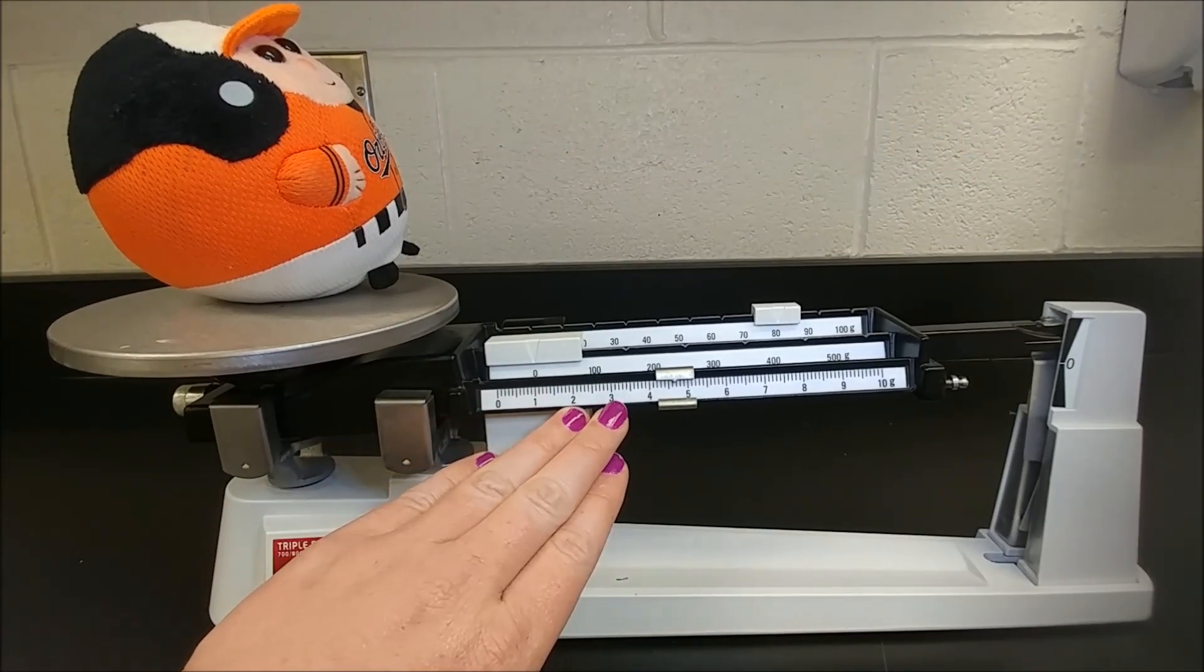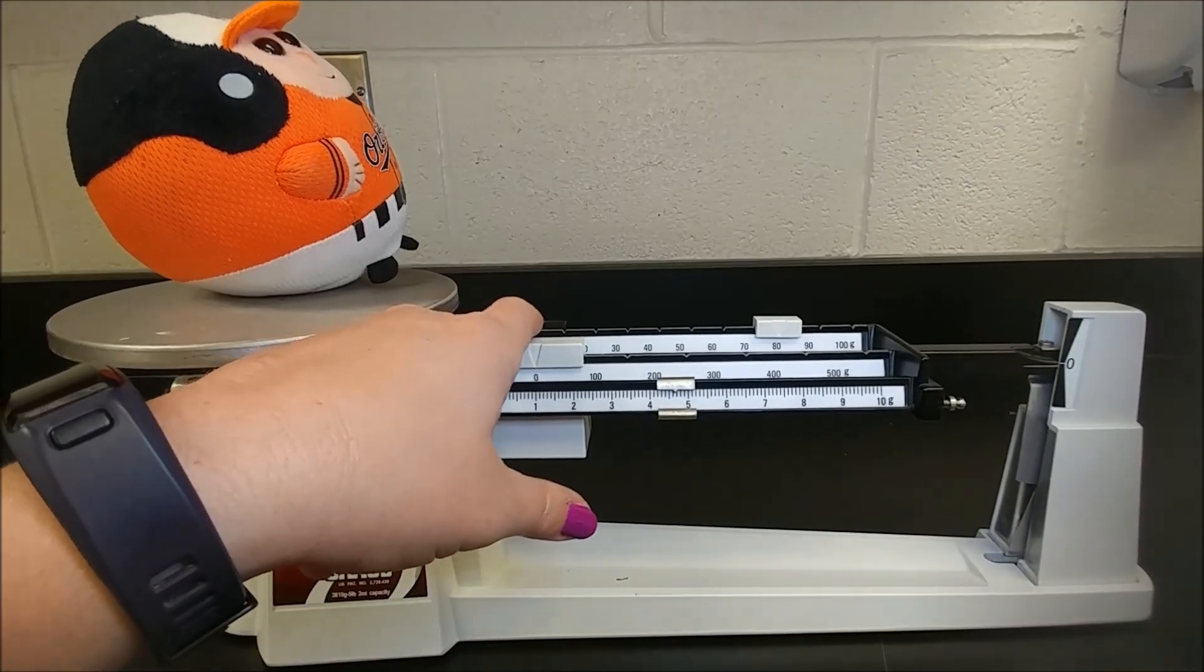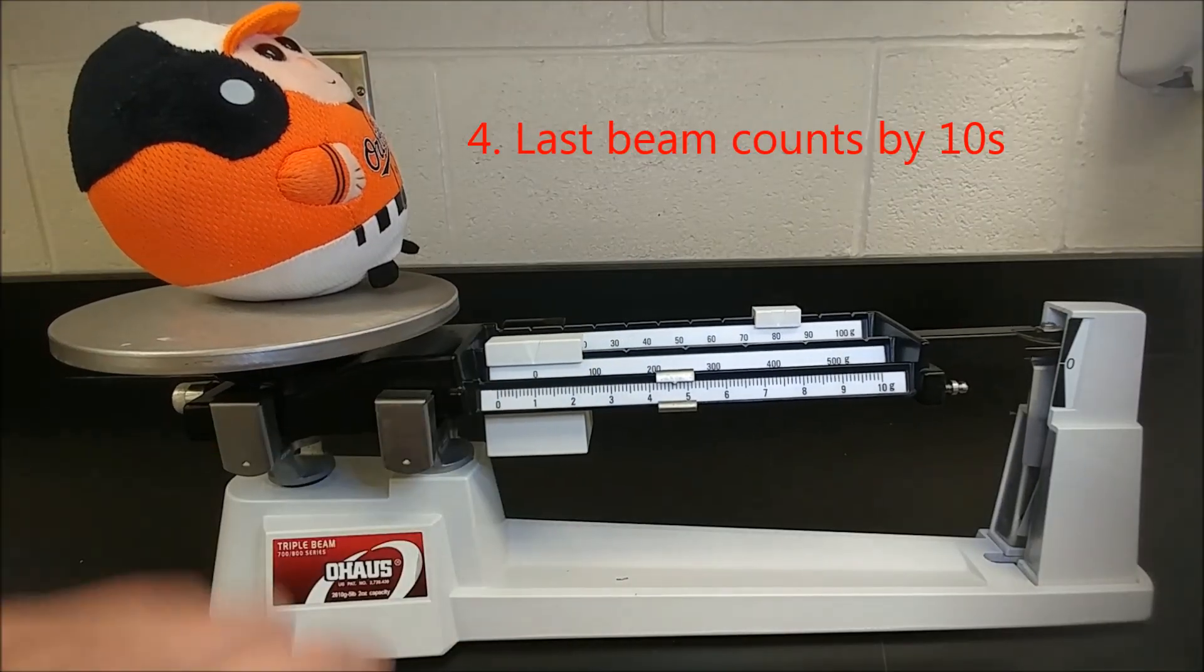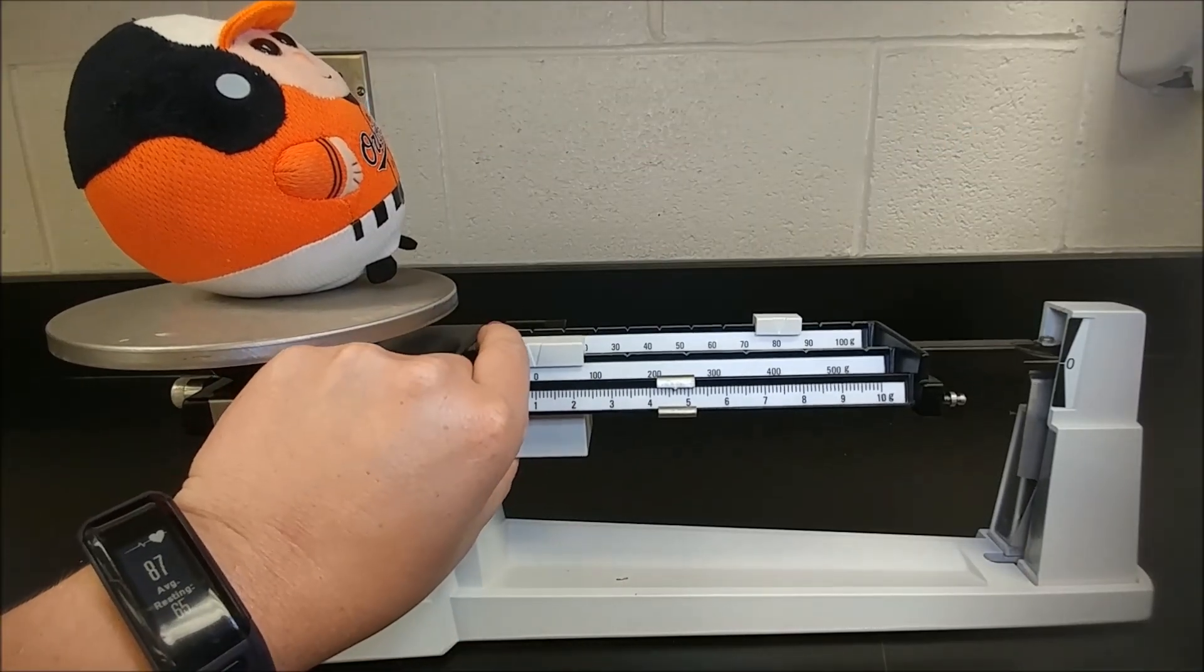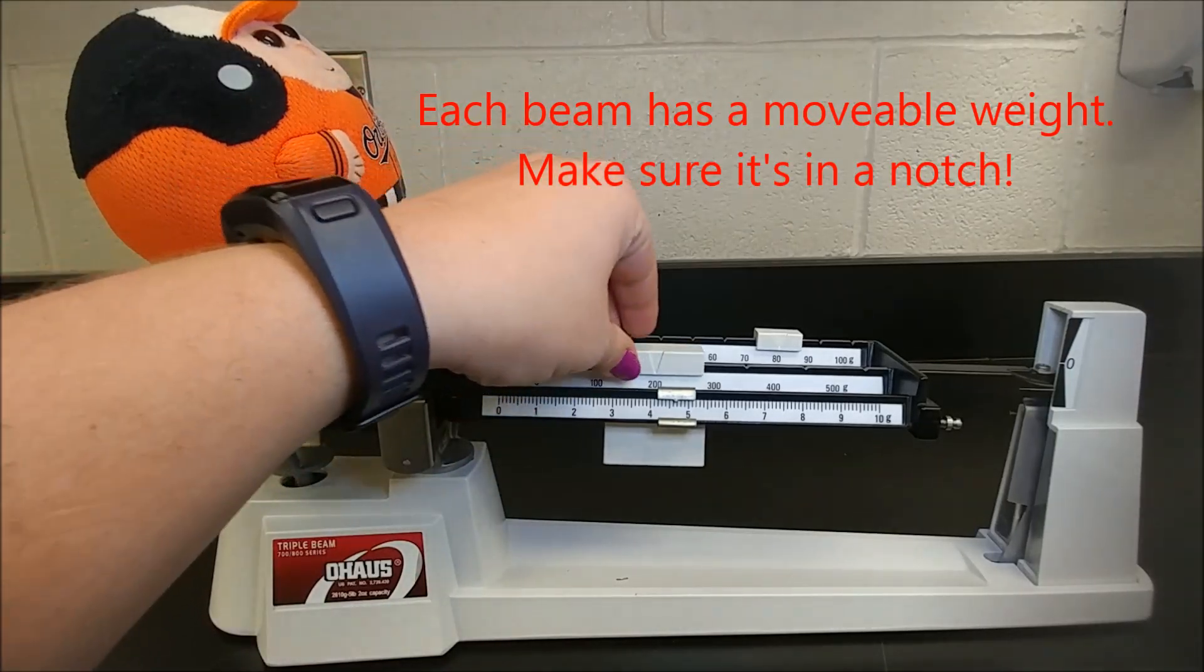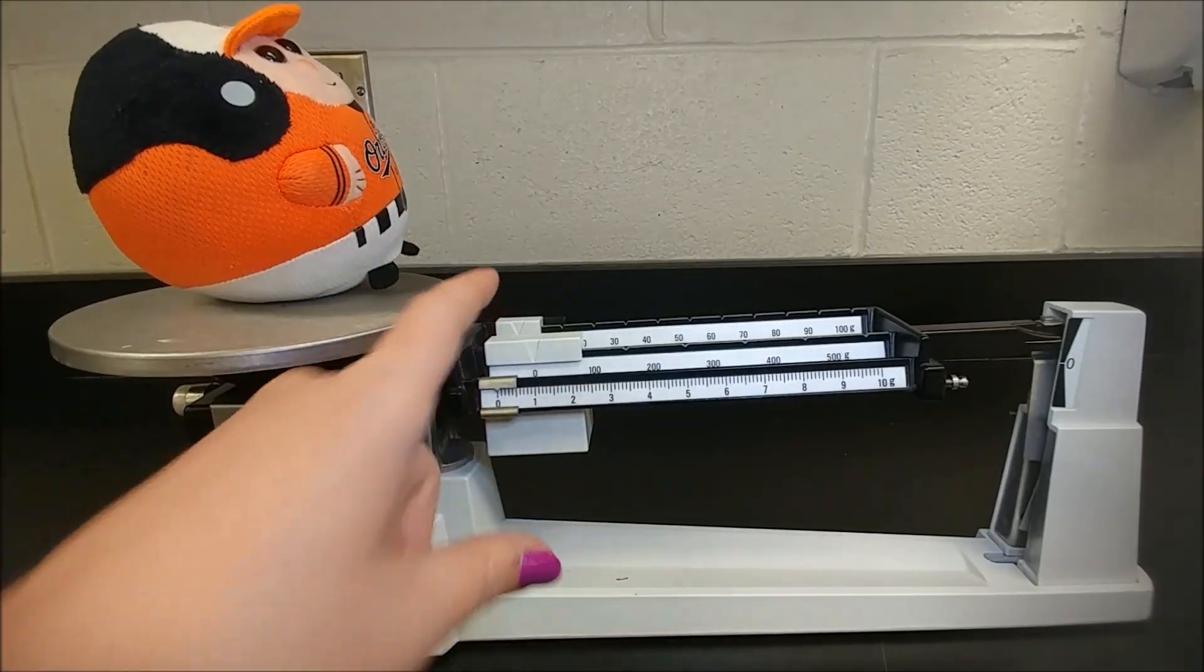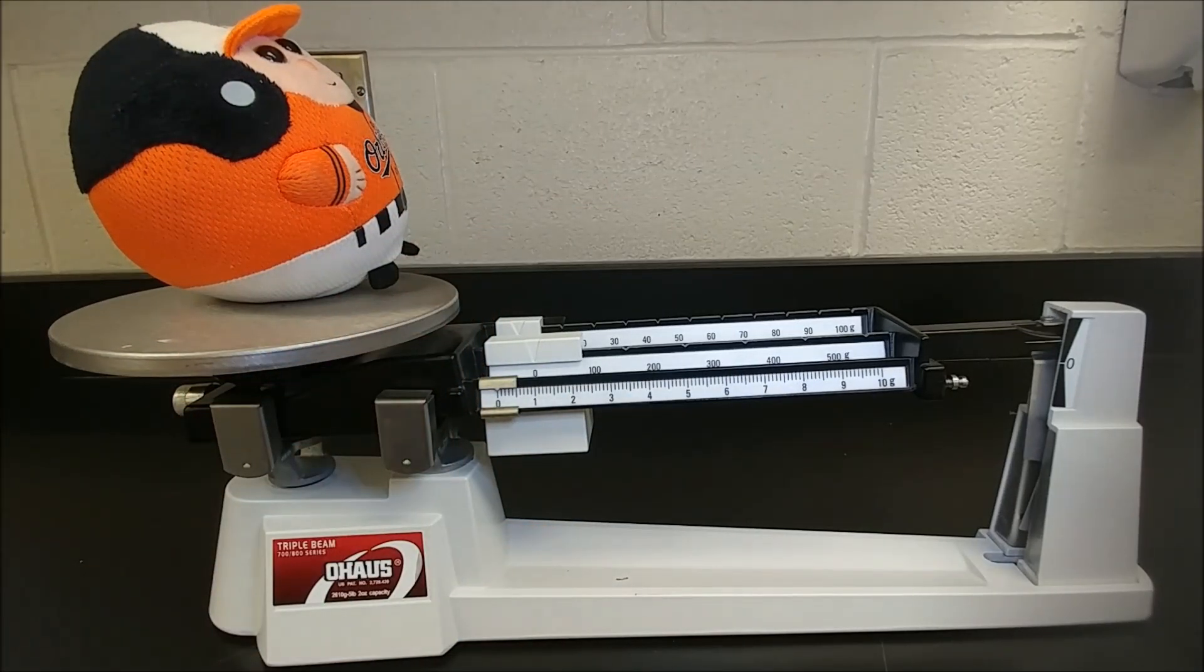The first one measures by ones, the middle beam measures by one hundreds, and the last beam measures by tens. These weights move along their beam at different notches to tell you how much mass there is within that object. It's because of these three beams that this is called a triple beam balance.